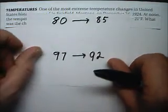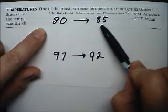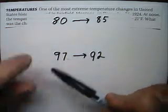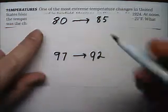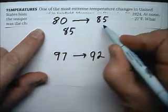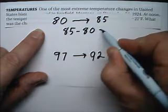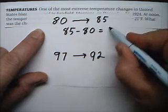For example, if your grade changed from 80 to 85, well, that went up, and the change would be 5. So to do this, you would do 85 minus 80, and you'd get a change of positive 5.